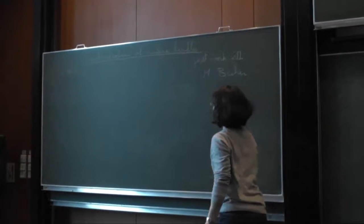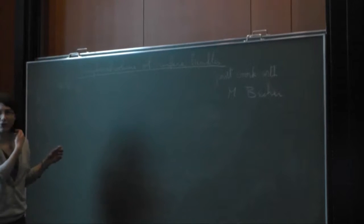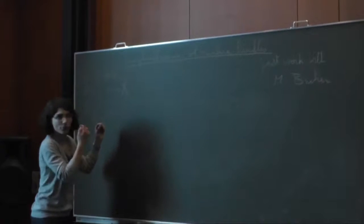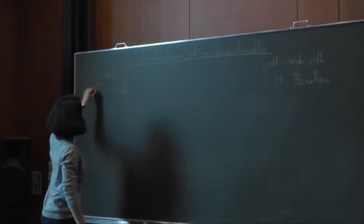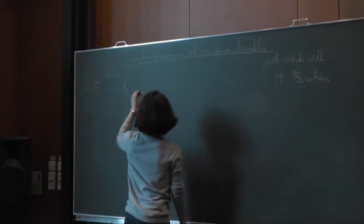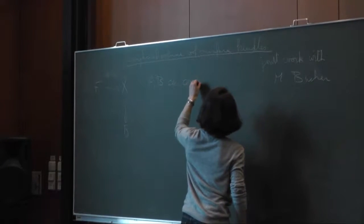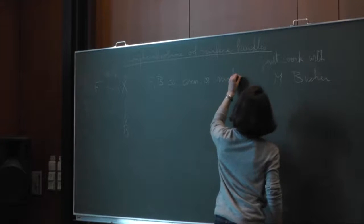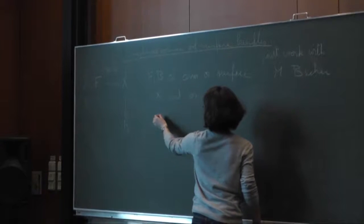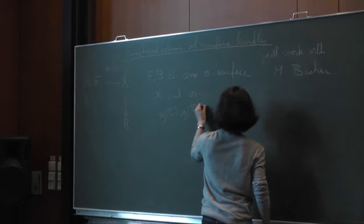So I tried to take a notation that had already been used during the week, but of course it's not the same as the previous one. So I consider surface bundles over surfaces. The fiber will be F, the base B, X is the total space. F and B are closed connected oriented surfaces, X has the induced orientation, and the genera of F and B, I think to be at least two.